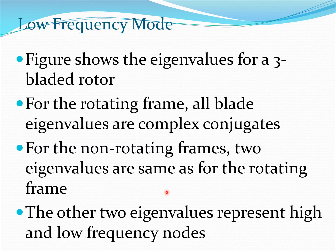We will show this in a figure next, and this figure is for a three-bladed rotor. For a rotating frame, all eigenvalues are complex conjugates. They are all co-located. When in a non-rotating frame, two of these are same as for a rotating frame and the remaining two represent the high and low frequency modes.